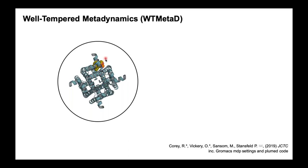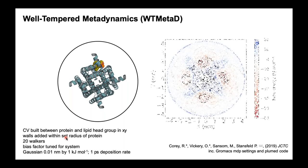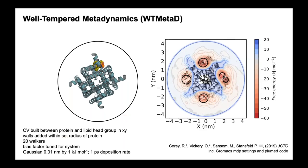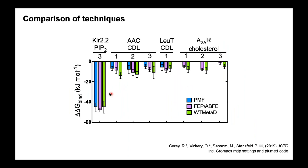With metadynamics, you can use the amount of Gaussians applied to reconstruct a 2D landscape for your lipid around the protein. This is more costly in computational time than the previous techniques, but you get a much more complete view of the protein-lipid landscape, and you don't need to know the actual site before running the free energy calculation. Running these for a number of different protein-lipid systems, we get fairly good agreement between the different methods for our free energies of binding, and crucially a similar ranking for different sites. This suggests you can choose the free energy method based on the system or the question you want to ask.